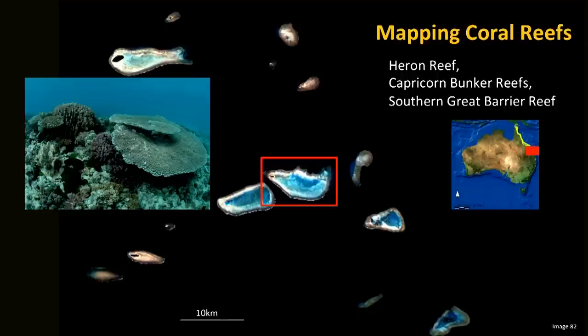We also look at coral reef environments in the same way. An area where we do a lot of research is in the Capricorn Bunker Group, which is part of the Southern Great Barrier Reef, and more specifically on Heron Island. Heron Island is a coral reef island with beautiful corals, and it is an area where we have done work for the last 12 years.